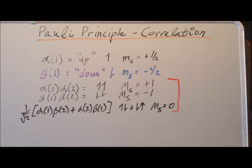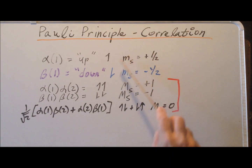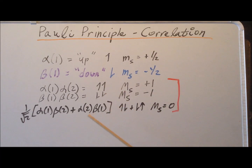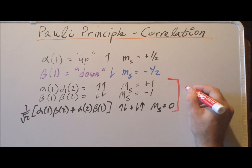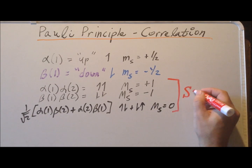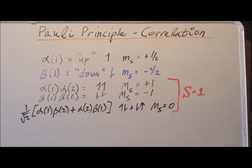This gives us a symmetric spin part to the overall wave function. Just as with orbital angular momentum where M_L ranges from minus L to plus L, if the spin M_S goes from minus one to plus one, the overall spin capital S is equal to one. So this is what we call a triplet state — and we can see why it's called a triplet: there are three different spin wave functions contributing to it.